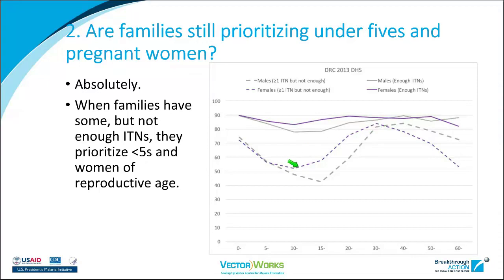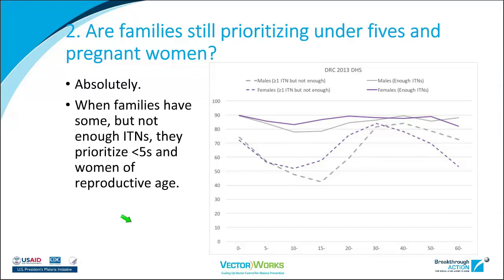When we look at households that own at least one ITN for two people, those discrepancies really flatten out. There's no meaningful gender difference. There's a small dip for teenagers — even with one ITN for two people you may not have enough for all teenagers, especially if they sleep in separate structures. But once you have enough nets in the household, discrepancies in both age and gender flatten out, which tells us that access to ITNs is really the key way to boost ITN use. In DRC, for those with enough nets, ITN use is around 90%.